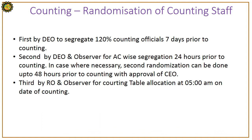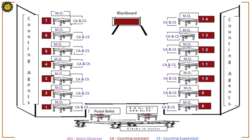Randomization of counting staff proceeds in three stages: First, by the District Election Officer to segregate 120% counting officials 7 days prior to counting. Second, by the District Officer and observer for assembly constituency segregation 24 hours prior to counting; if necessary, the second randomization can be done up to 48 hours prior with approval of the Chief Observer. Third, by the Returning Officer and observer for counting table allocation at 5 AM on the date of counting.